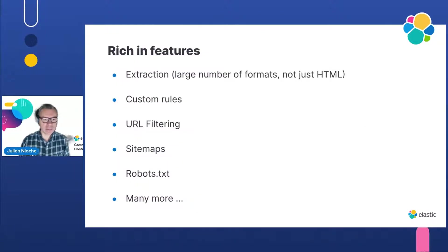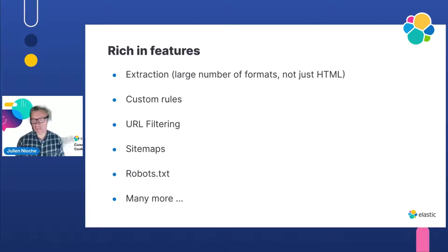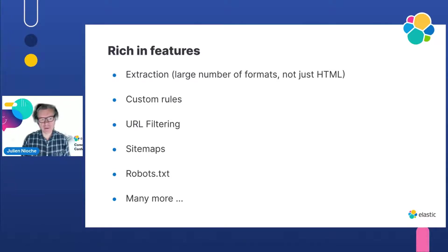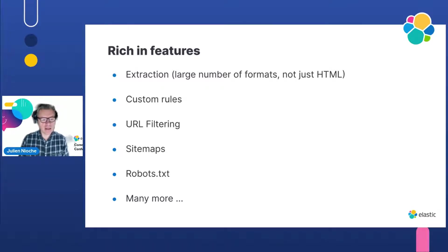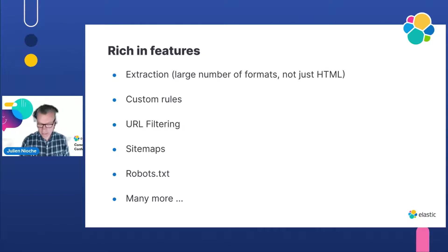It is rich in features and does all the things you would expect from a web crawler. It extracts content from web documents — not just HTML, but other formats as well like PDF and Word. You can define custom rules for extraction so that if there is specific information within a web page that you want to index as a field in Elastic, you can write custom instruction rules for that purpose. You can define rules for filtering URLs and controlling the expansion of the crawl, and it handles sitemaps, robots.txt, and many other things.